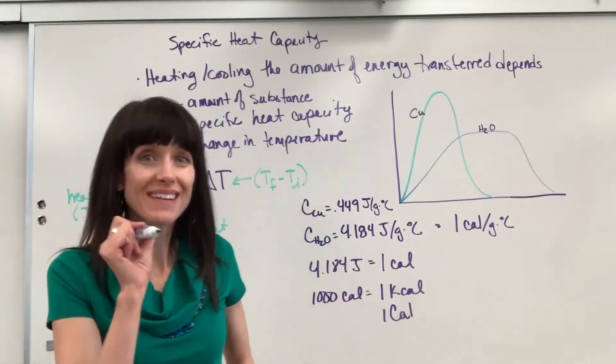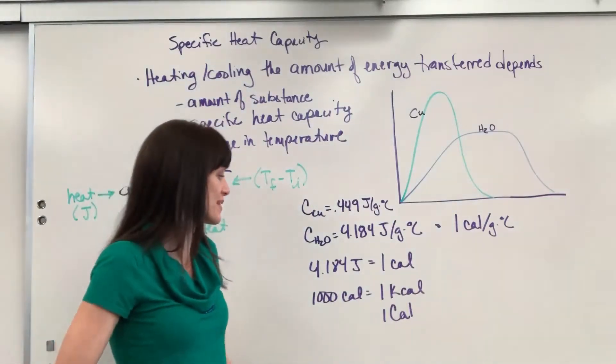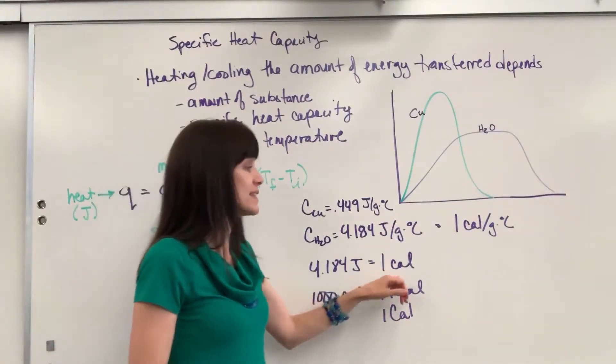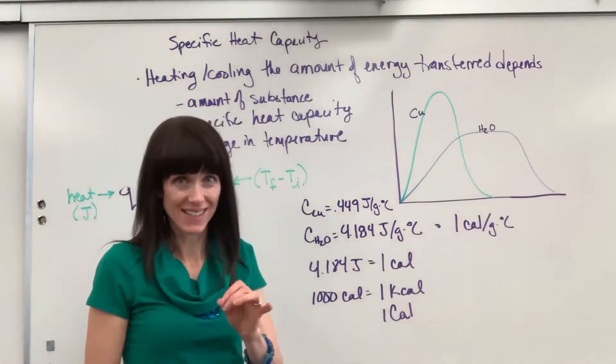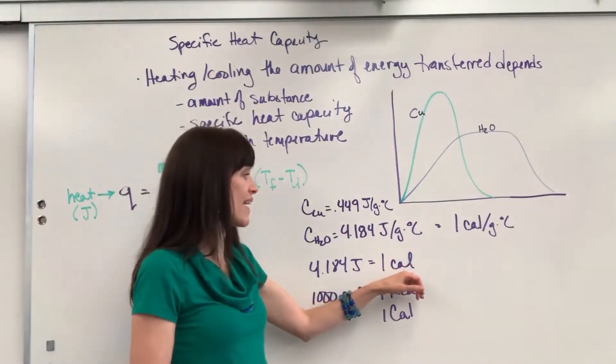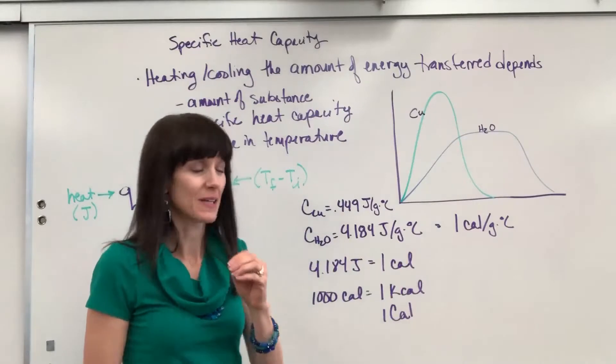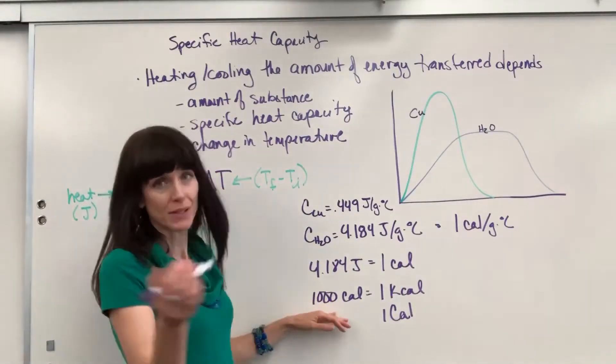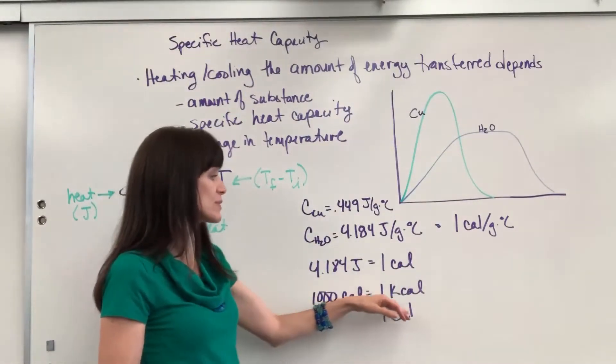And so you can say 4.184 joules equals one calorie. Now there is something tricky, a little devious in the food industry. That is a lowercase c. So C-A-L lowercase c. A thousand calories equals one kilocalorie.